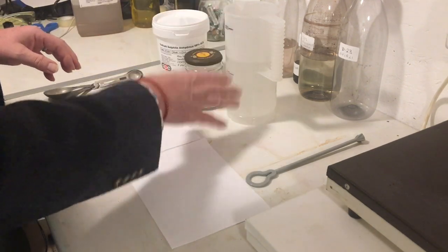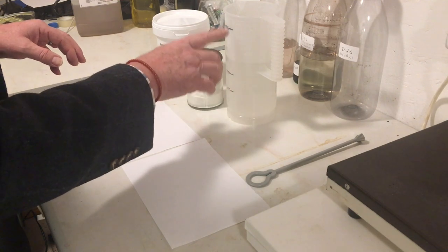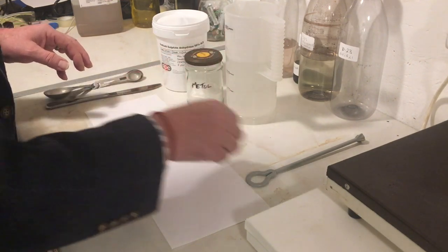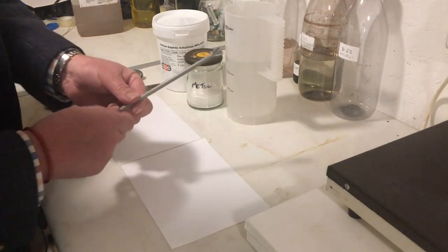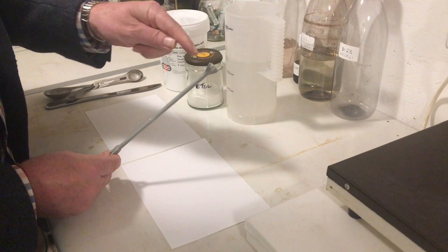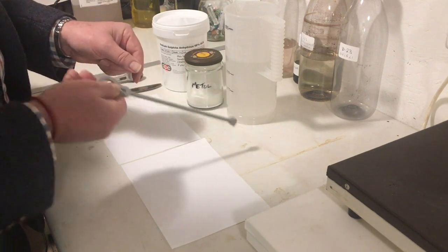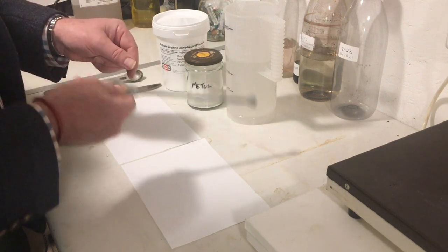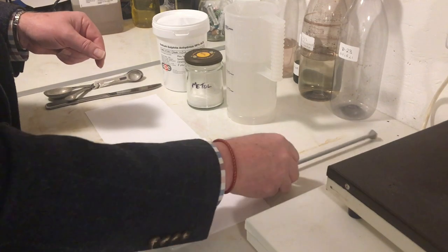I'll also need a measuring jug that measures accurately to a thousand cc's or milliliters. And a stirrer. This is a chemical stirrer that I bought online. It has a flat end so I can crush and pulverize the crystals to help them break down into the solution.